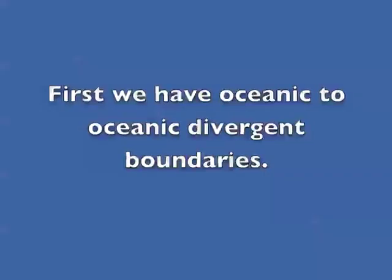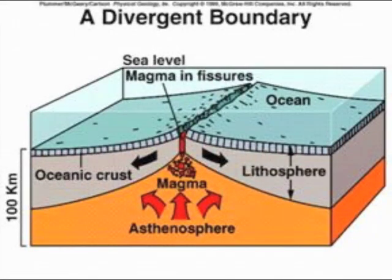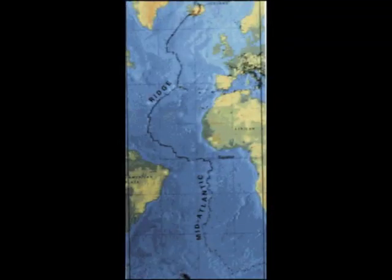First, we have oceanic-to-oceanic divergent boundaries. When a divergent boundary occurs underneath oceanic lithosphere, the rising convection current lifts below the lithosphere, making a mid-ocean ridge. Forces stretch the lithosphere and produce a deep fissure. When it opens, pressure is reduced onto the mantle below, which responds by melting, and new magma flows into the fissure. An example of an oceanic divergent boundary would be the Mid-Atlantic Ridge.